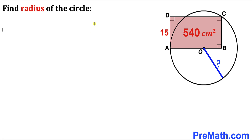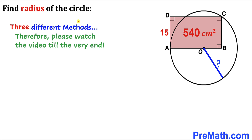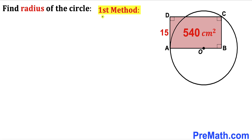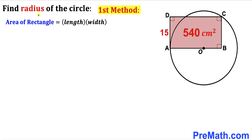Let's get started. In this video I am going to share three different approaches, so please watch the video till the very end. Our first step is to focus on this pink rectangle whose area is 540. One of its side lengths is 15, and we need to calculate side AB. Let's recall the area of rectangle formula: area equals length times width.